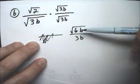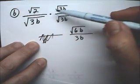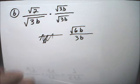Because I can put them all together under 1, and 2 times 3 is 6, so it's the square root of 6B over 3B.